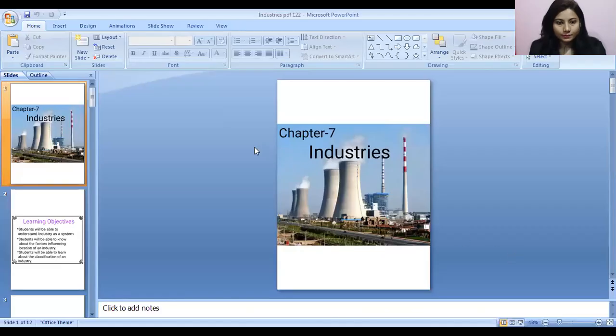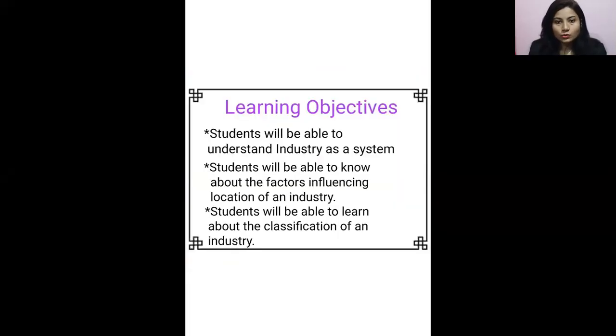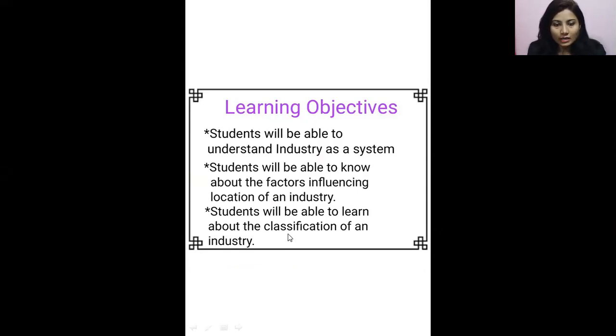Hello everyone, today we are going to learn about the very important chapter of grade 8, that is industries. The learning objectives are: students will be able to understand industry as a system, know about the factors influencing location of industries, and learn about the classification of an industry.